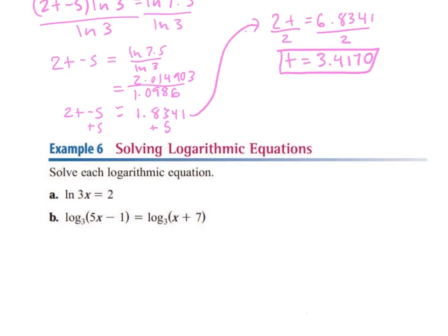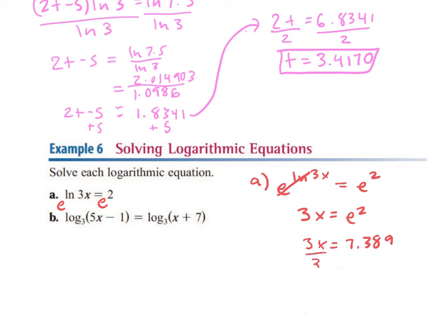For example 6, we're doing the same thing but in two different forms. For part a, anytime we have the ln of x on one side, we take e on both sides and have our equation as our exponent. So e to the ln of 3x equals e squared. Since e and ln cancel out, this is just 3x equals e squared. We compute e squared in our calculator, which is 7.389, then divide both sides by 3, giving us x equal to 2.4630.